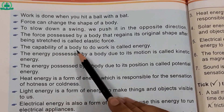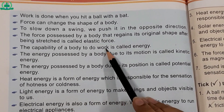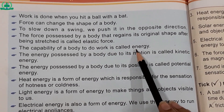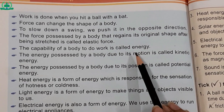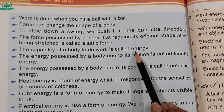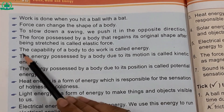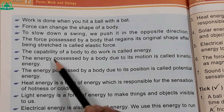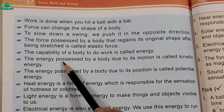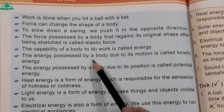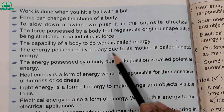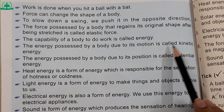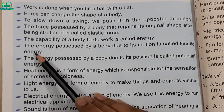Number eight — the capability of a body to do work is called energy. (Body ke kaam karne ki salahiyat ko us ki energy kehte hain.) Number nine — the energy possessed by a body due to its motion is called kinetic energy.